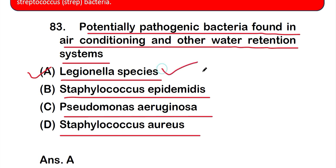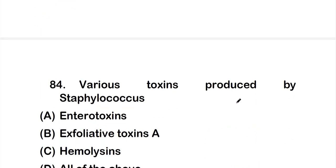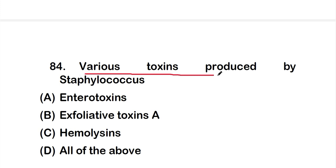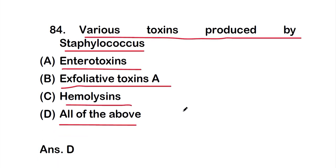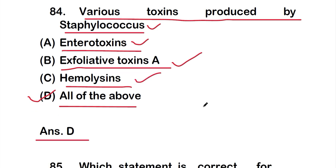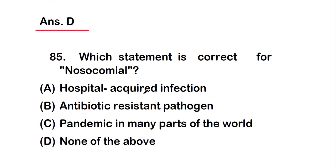Question number 84: Various toxins produced by Staphylococcus. Option A: enterotoxin, option B: exfoliative toxin A, option C: hemolysin, option D: all of the above. The correct answer is option D — all of the above are toxins produced by Staphylococcus: enterotoxin, exfoliative toxin A, and hemolysin.